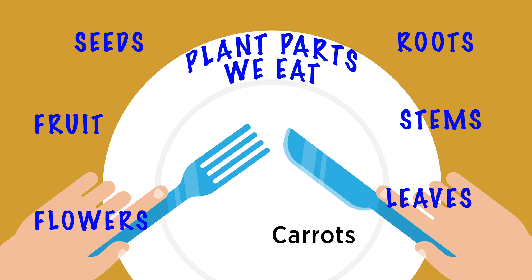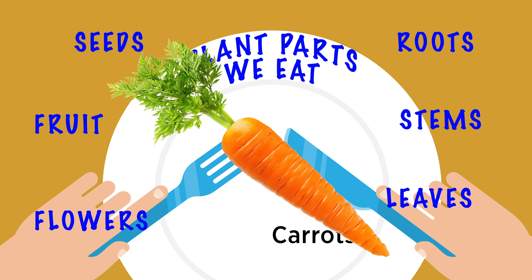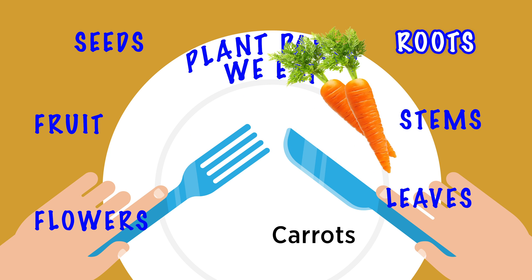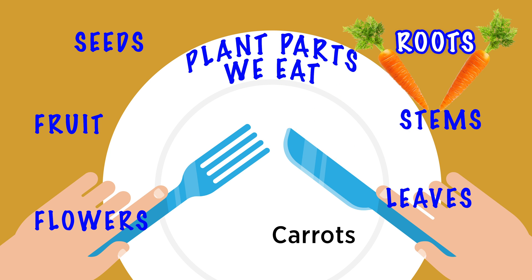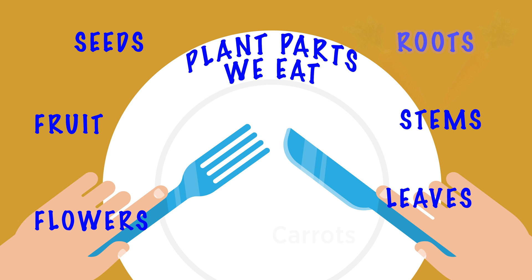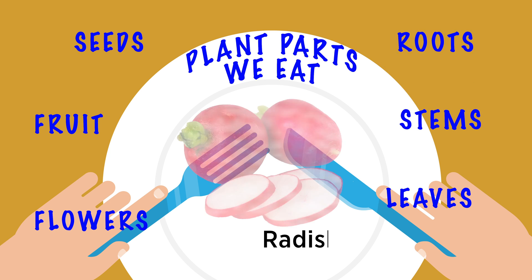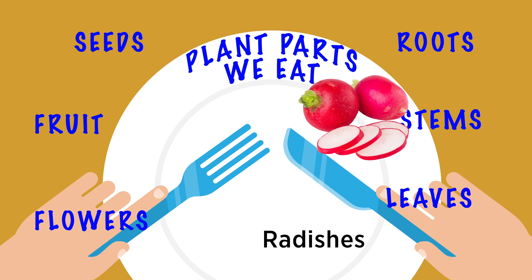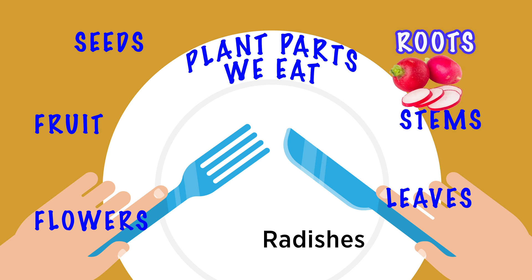A carrot — carrots come out of the ground; you don't see them until you harvest them. Those are actually roots. Radish is the same thing — it only takes about a month to grow a radish, but they are roots.